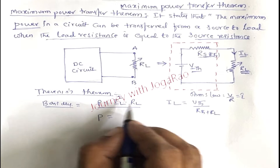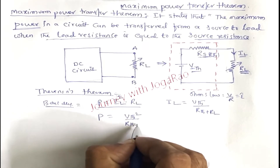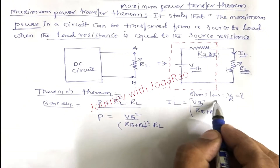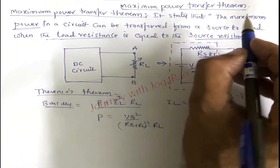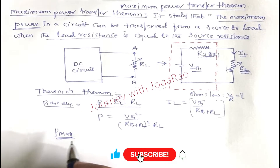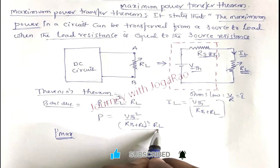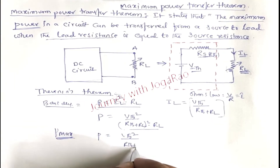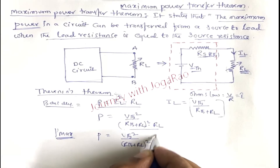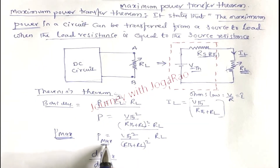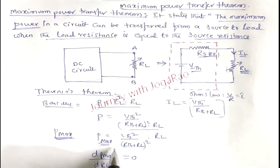After substituting, we get P = V_Thevenin² / (R_Thevenin + RL)² × RL. The main objective is maximum power. To find maximum power, we take the derivative of V_Thevenin² / (R_Thevenin + RL)² × RL with respect to RL.